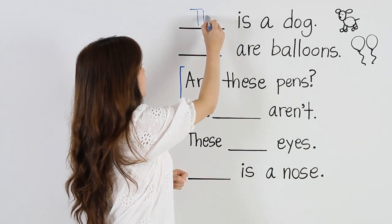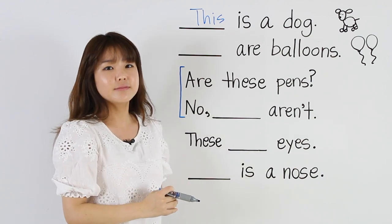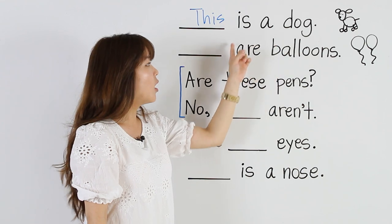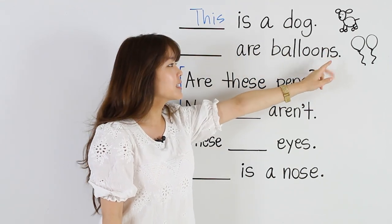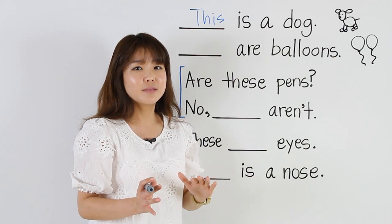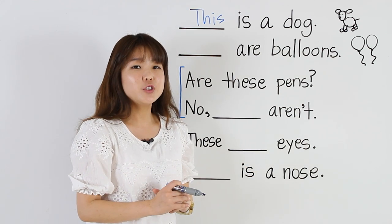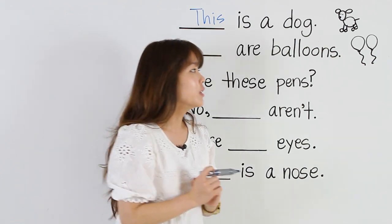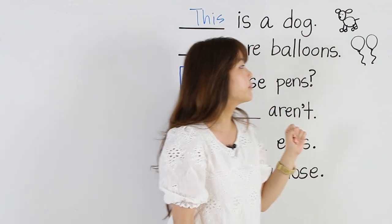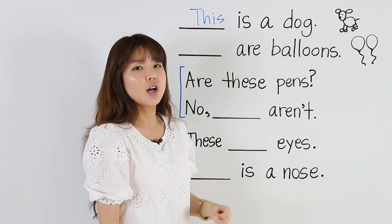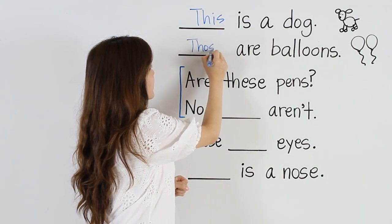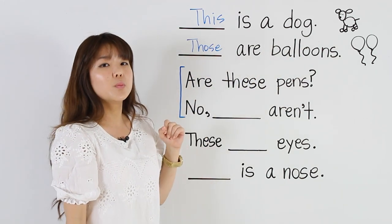So I'm going to write 'this'. The next one says 'are balloons' — balloons with an S, more than one. So can we use 'this' or 'that'? No. We have to use 'these' or 'those'. If it's close, I say, 'These are balloons.' If they're far, 'Those are balloons.' So let's write: Those. Those are balloons.